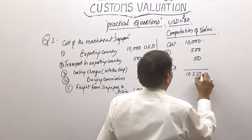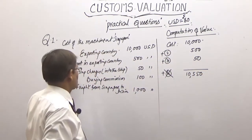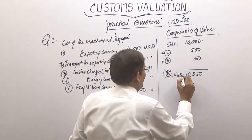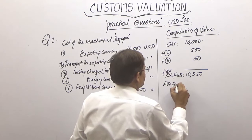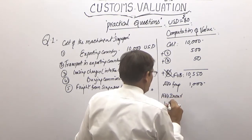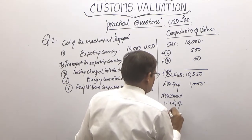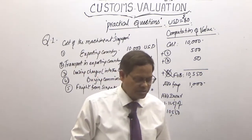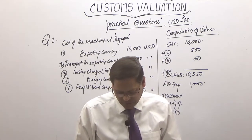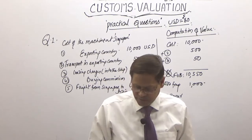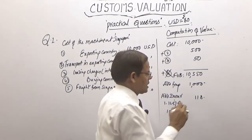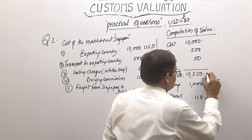Calculate 1.125% of $10,550 — that is cost plus transport plus loading charges, which is the FOB. Buying commission is not added. Once we get FOB, add freight of $1,000 and insurance at 1.125% of $10,550. That comes to $118.69.